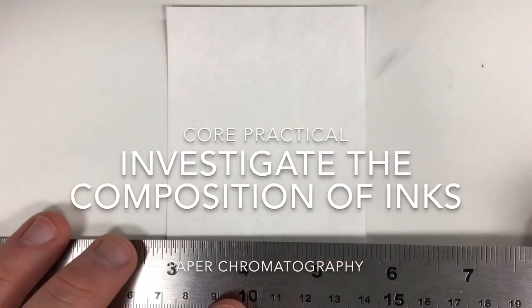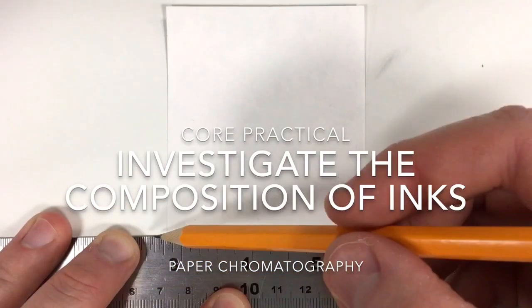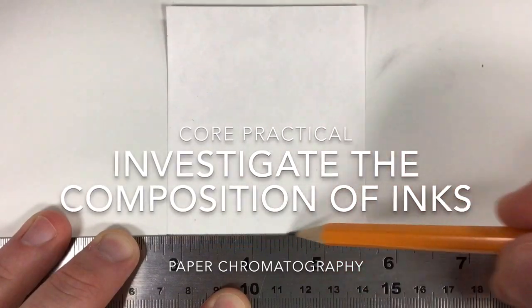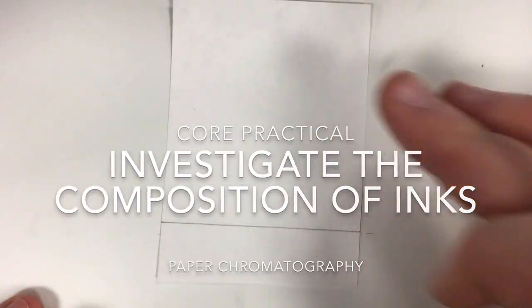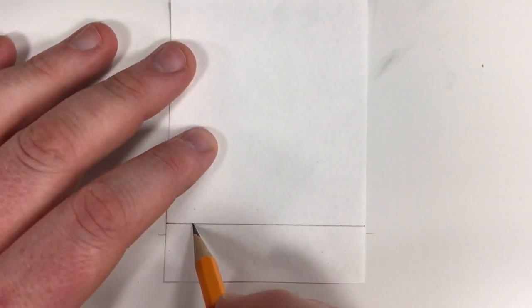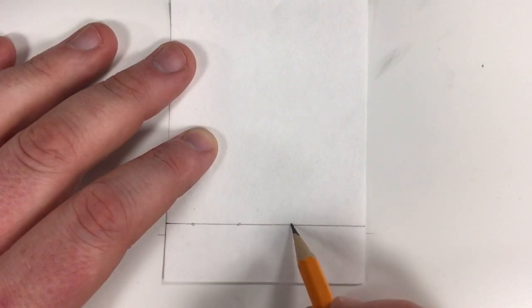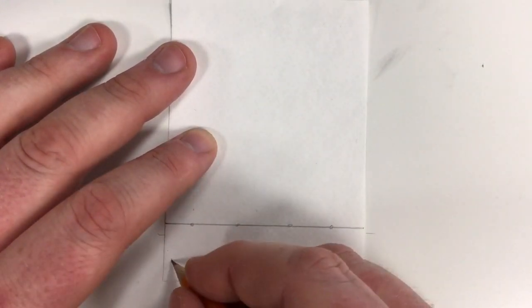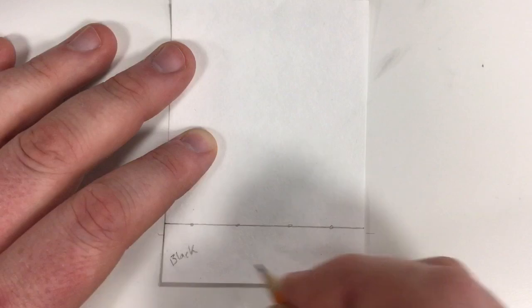In this experiment we will investigate the composition of inks using paper chromatography. Firstly we must define our origin by drawing a line using a ruler roughly one centimetre up from the bottom of the chromatography paper. This must be done in pencil as the pencil is insoluble in the water solvent.